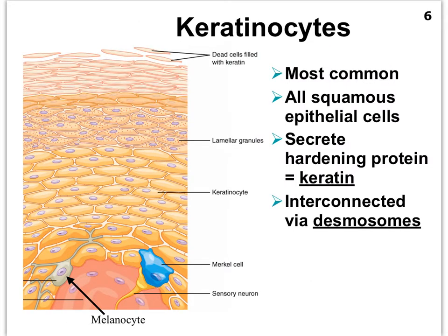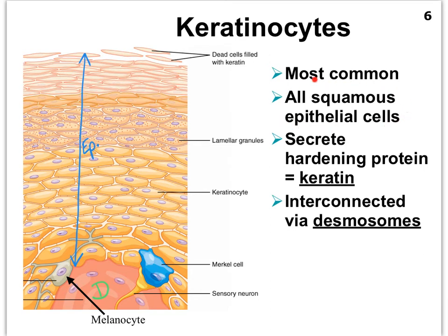What you're looking at here — from the top to where it turns pink — all of that is epidermis. I'll use 'EP' to specify that is the epidermis, and a different color with the letter 'D' to indicate where the dermis starts. The epidermis is very cellular, and most of the cells you see — all these yellow cells from the basal surface to the apical surface — almost all of those are keratinocytes. These are your squamous epithelial cells, the most common, that produce that hardening protein called keratin.